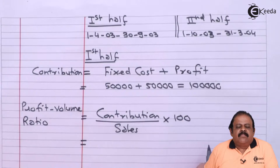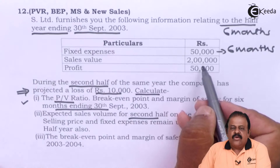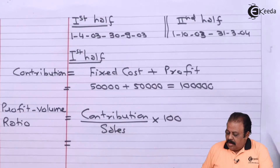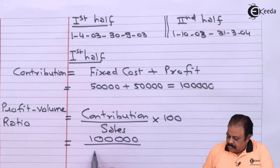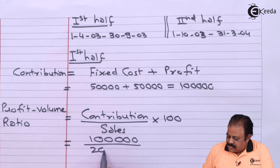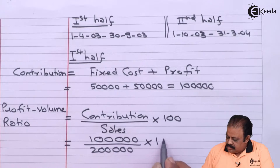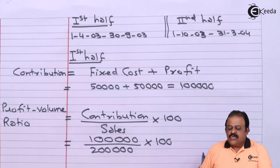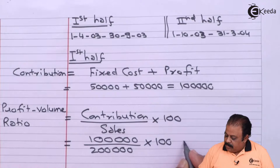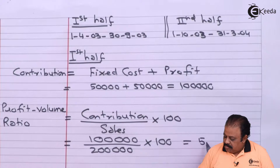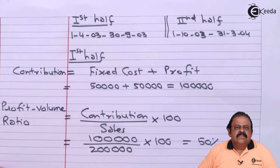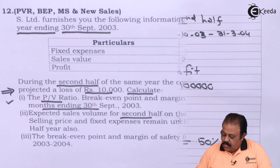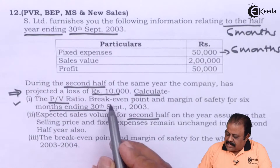The formula for PV ratio is contribution divided by sales multiplied by 100. Sales for the first half are rupees two lakhs and contribution is one lakh. So PV ratio = one lakh divided by two lakhs multiplied by 100, giving us a PV ratio of 50% for the first six months.